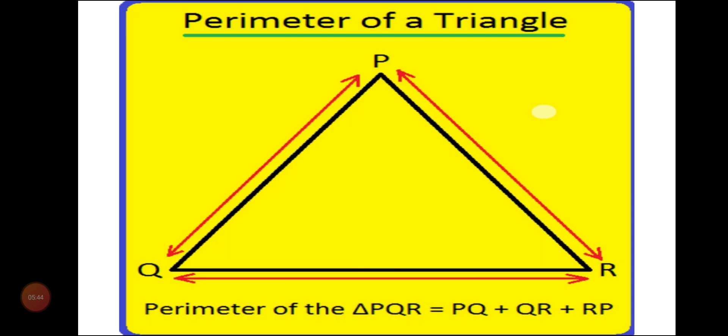Now we will discuss the perimeter of a triangle. The perimeter of any polygon is found by adding all the sides. For this triangle, just add all three sides: PQ plus QR plus RP gives you the perimeter of the triangle.